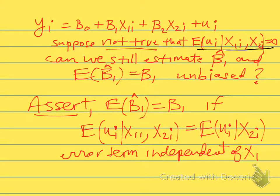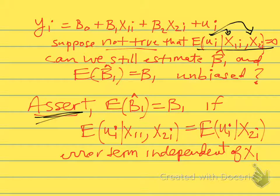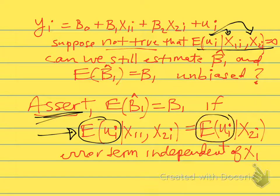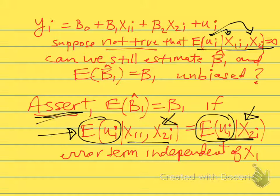In the past, our assumption for the validity of the coefficient — for it to be unbiased — has been that the error term in our regression is not correlated with the included variables. That is, the error is not correlated with x1 and x2 if we have two variables included in our regression. What we're going to assert now is the weaker condition that the error term is uncorrelated with x1 controlling for x2. So the expected value of the error term, controlling for x1 and x2, is the same as the expected value of the error term if we just controlled for x2 alone.